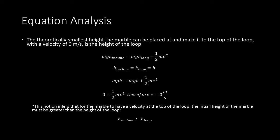What does this actually mean? This infers that for the marble to have a velocity at the top of the loop, the initial height of the marble must be greater than the height of the loop. Therefore, h of the incline must be greater than h of the loop.